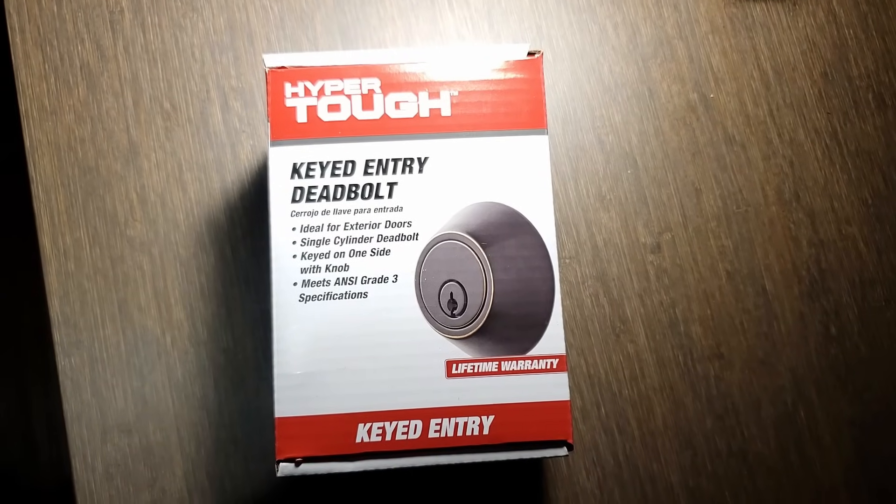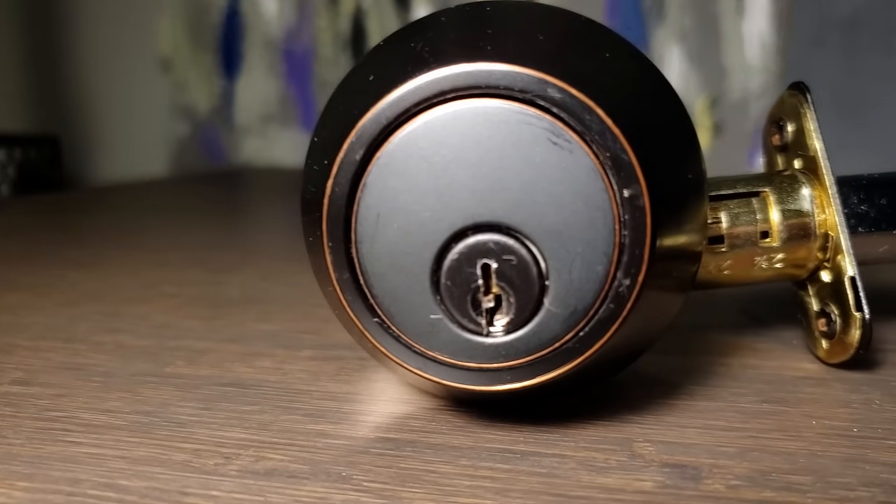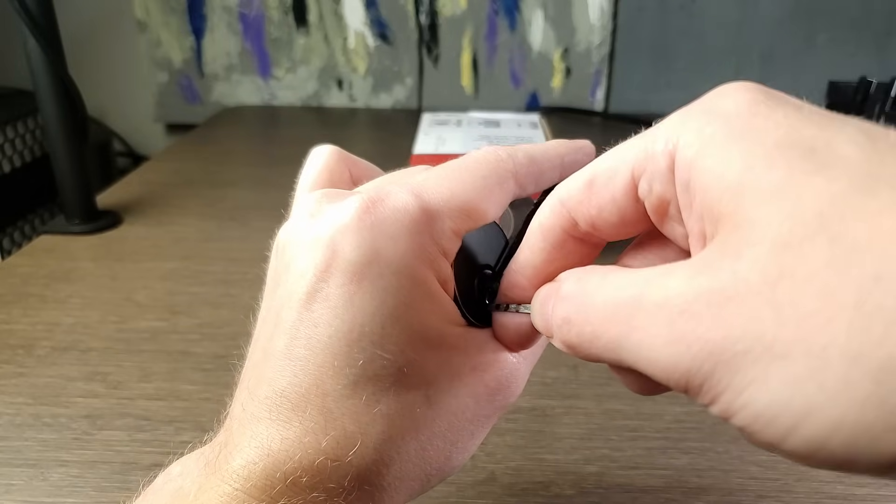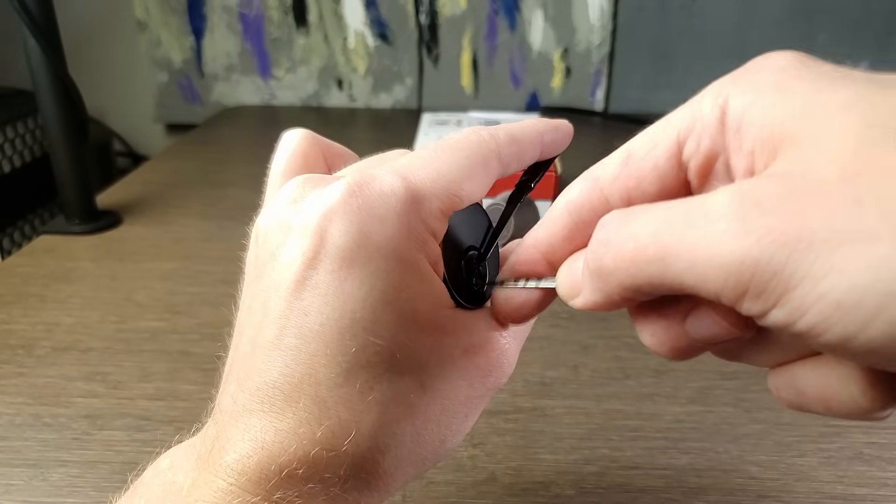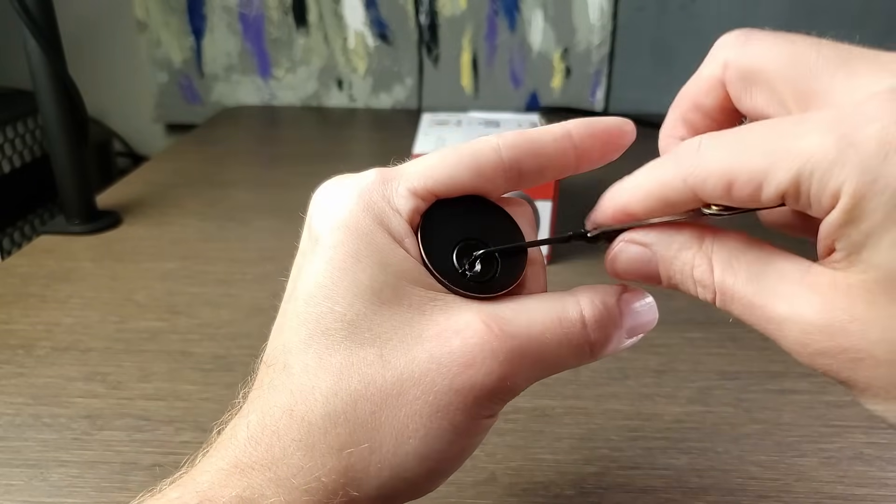I wanted to start with an existing lock to modify, and I thought this ten-dollar Hyper Tough lock from Walmart would be a fun starting point. You can tell by all the scratches that I spent some time getting a good feel for what it takes to pick it as is. I have very little experience with this, but before long I could get it open pretty consistently.